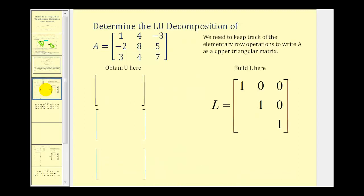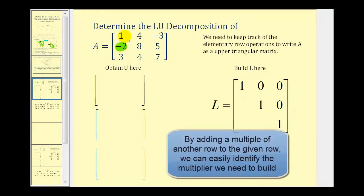Let's take a look at an example. We want to determine the LU decomposition of the given three-by-three square matrix. We want to perform row operations on this matrix to obtain an upper triangular matrix, which means we need a zero in the row two column one position, the row three column one position, and the row three column two position. Let's start by obtaining a zero in the row two column one position.